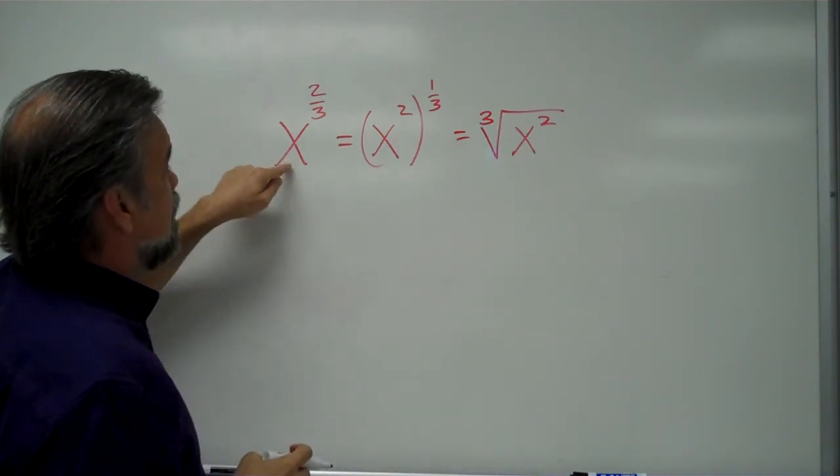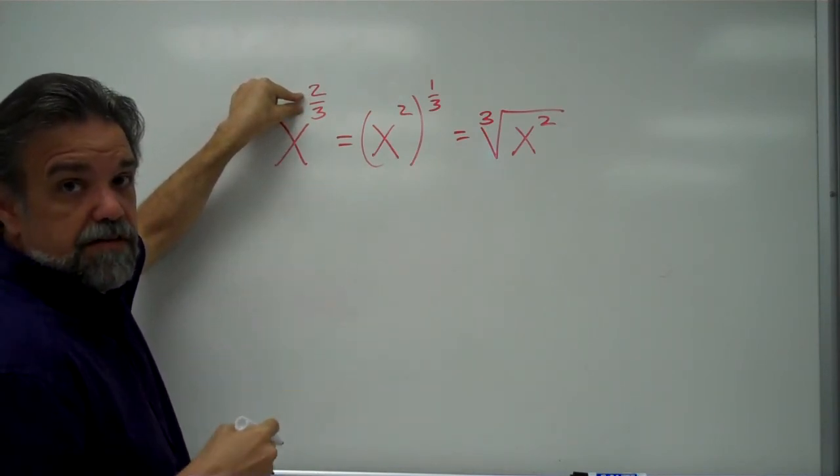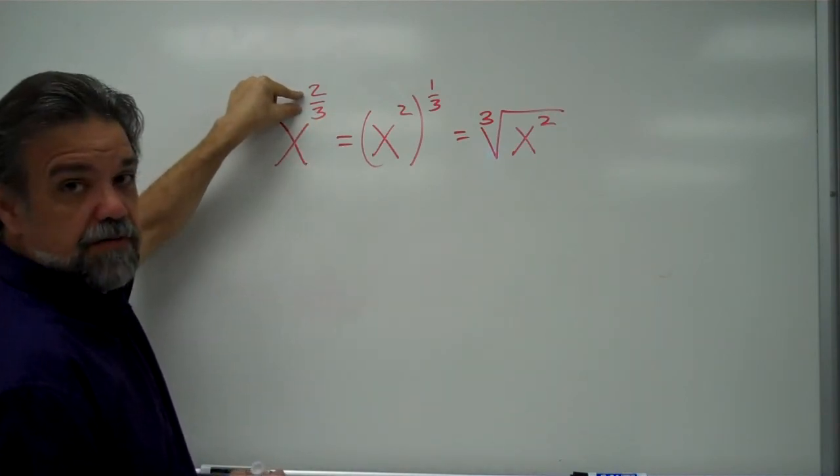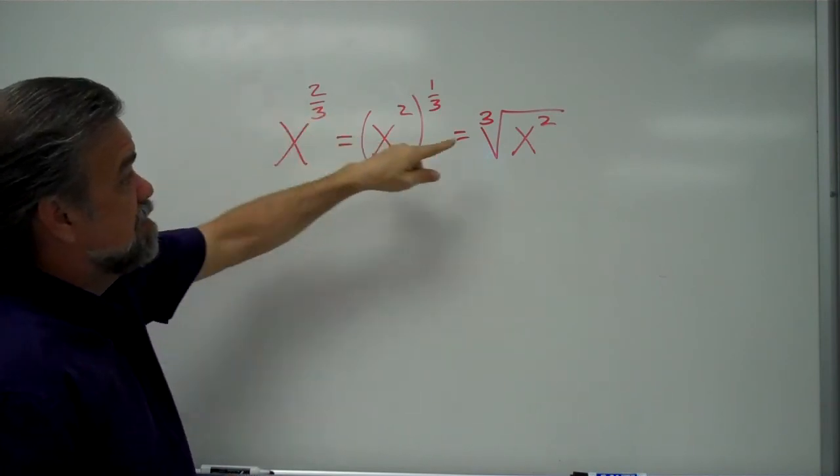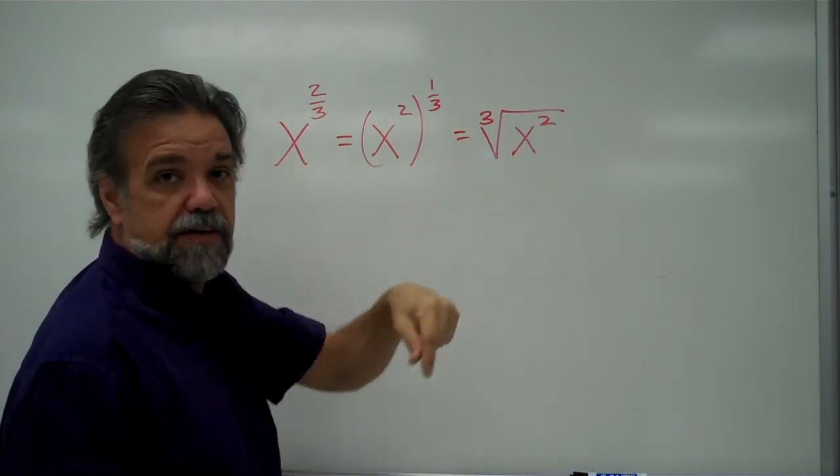And there you go. This and this are exactly the same thing. So, if you have x to a rational fraction that you're writing as a rational number, that you're writing as a fraction, then what that means is the denominator is going to be your index, and the numerator you keep as your exponent. So, it's going to be the cube root of x squared.